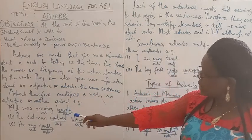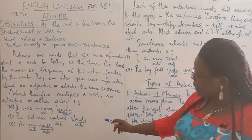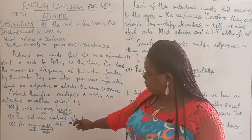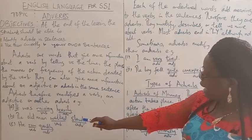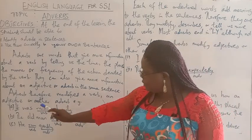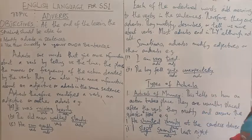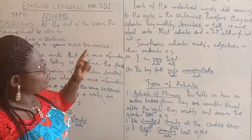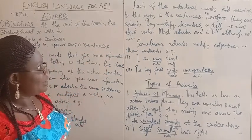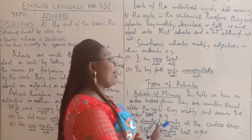In the second sentence, 'the old man walked slowly' — 'slowly' is an adverb modifying the verb 'walked'. In the third sentence, 'he ran quickly' — 'quickly', as an adverb, is modifying the verb 'run'. These words add meanings to the verb in the sentences. Therefore, they are adverbs — they modify, they describe, they tell us more about verbs.